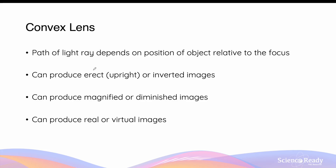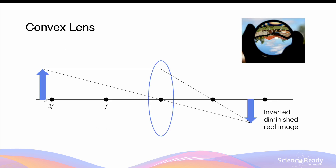For convex lenses, the path of the light ray and the type of image formed depends on the position of the object relative to the focus of the convex lens. It can either produce erect or upright, as well as inverted images. The image could be magnified or diminished compared to the actual size of the object. And the image can also be real or virtual. If an object is placed two focal lengths away from the convex lens, we can draw a light ray that's parallel to the principal axis, which will refract to pass through the focus. And we can also draw a light ray that passes through the center of the lens without any refraction. The intersection of the two light rays will help us construct the image, which will be inverted or upside down, diminished, so small compared to the actual object, and this will be a real image.